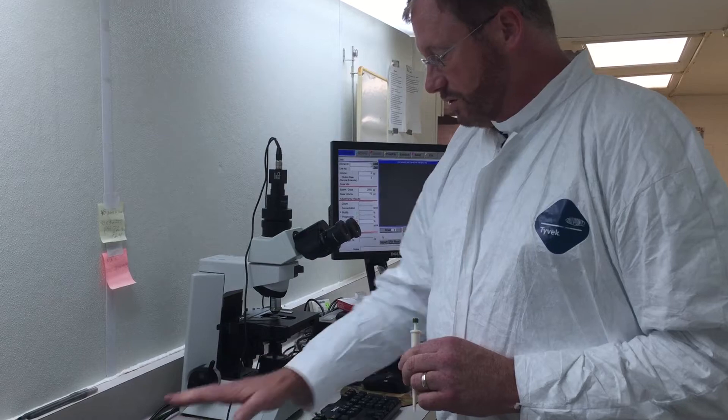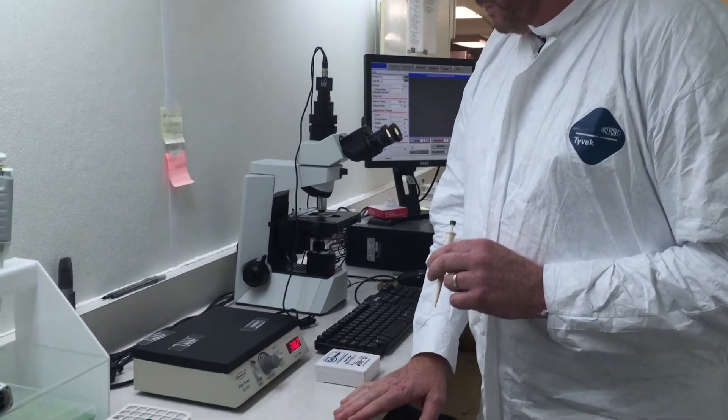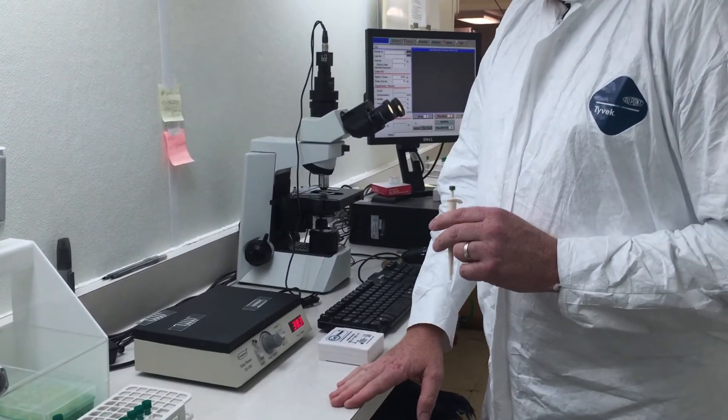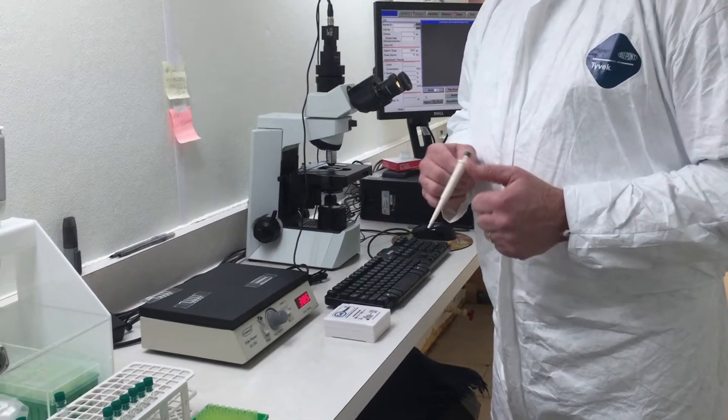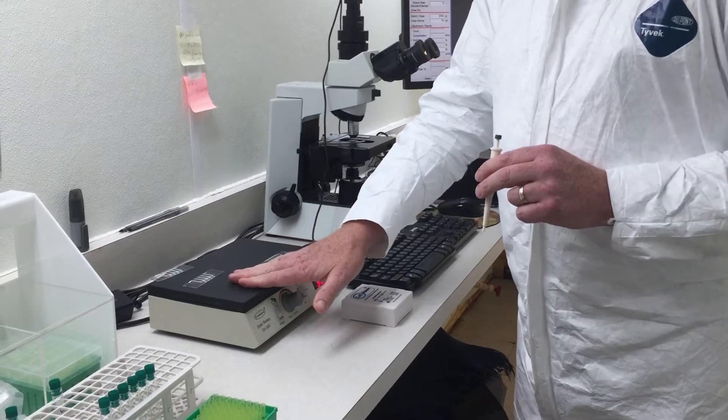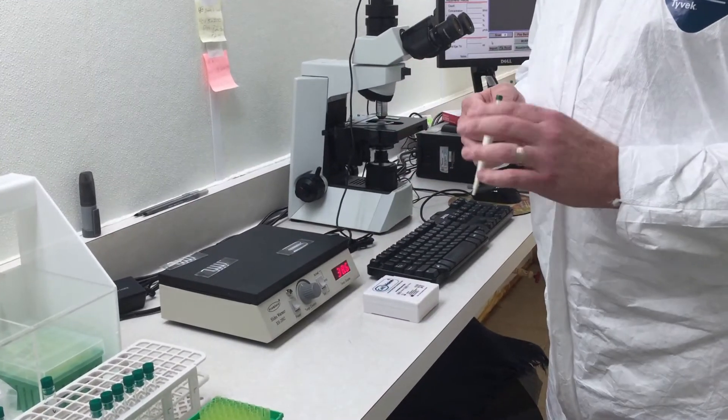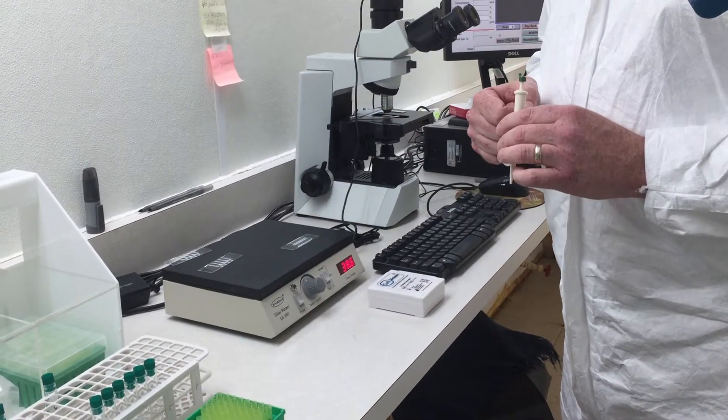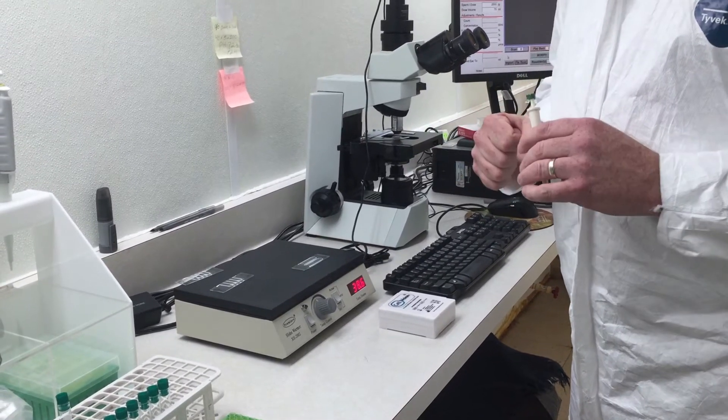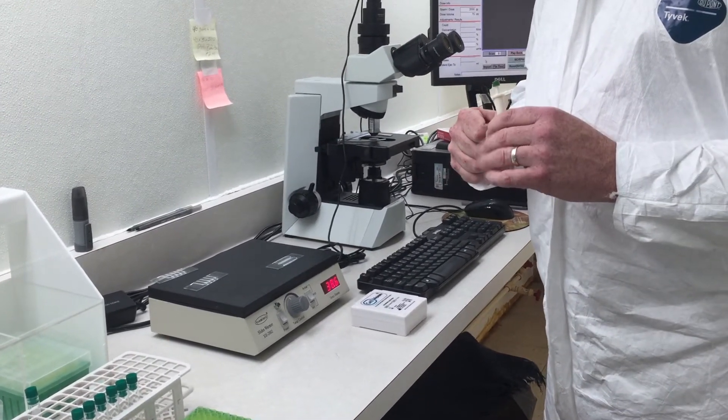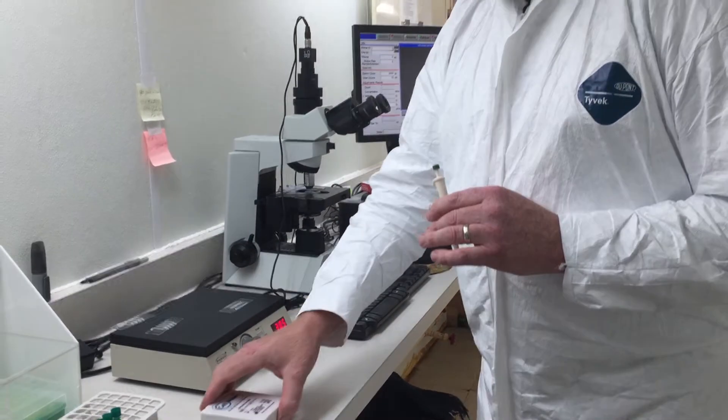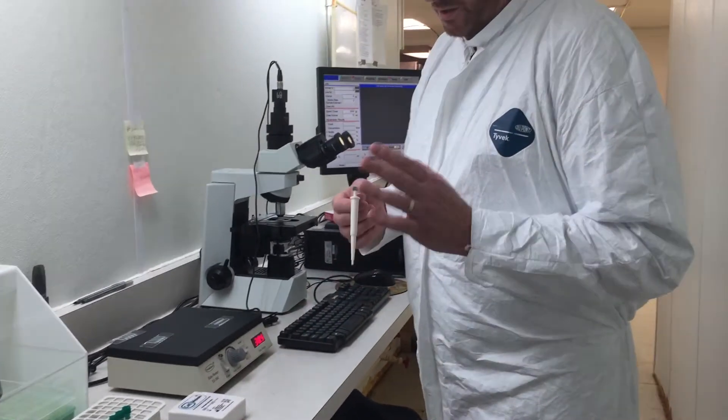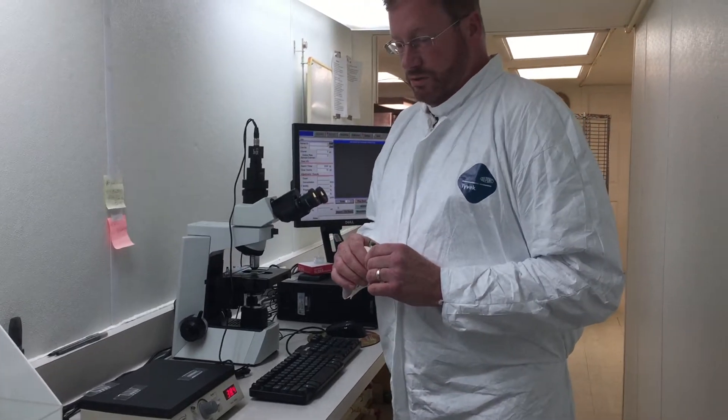We're also using a slide warmer. It's a good idea to have a heat source to warm your sample or the Cell Vision slide. If you don't have a slide warmer, you can use a simple electric heating pad or chemical heating pads. Anything that brings the slide up to body temperature will be helpful, especially in analyzing the motility of the sample.